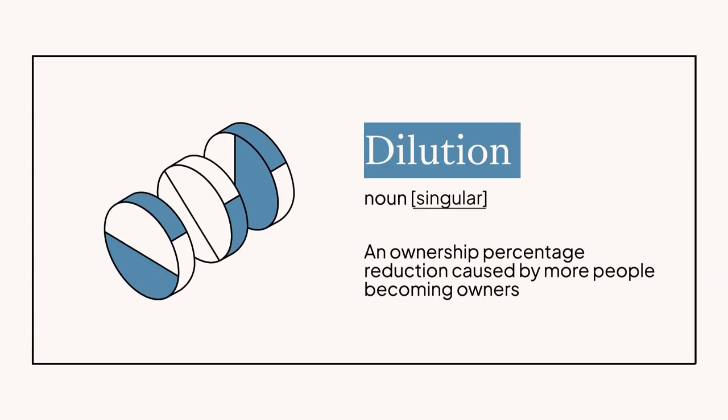Okay, dilution — this is a big one. Dilution is a very important concept to understand. It goes hand in hand with issuing shares in a company, and managing dilution effectively is a key advantage of having a well-functioning cap table. Simply put, dilution is a reduction in ownership percentage for any individual investor, which is naturally caused by more investors entering the cap table.